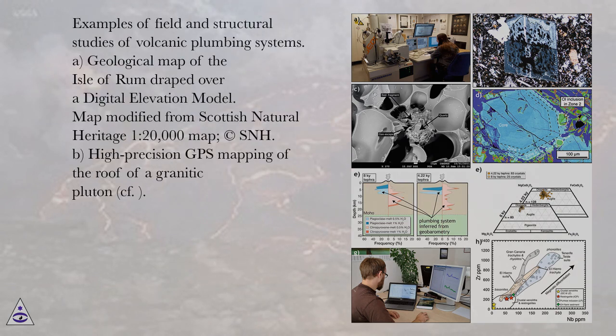Examples of field and structural studies of volcanic plumbing systems: (A) Geological map of the Isle of Rum draped over a digital elevation model, map modified from Scottish Natural Heritage 1:20,000 map; (B) High-precision GPS mapping of the roof of a granitic pluton; (C) Results of 3D reconstruction of a granitic pluton based on GPS mapping.